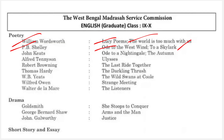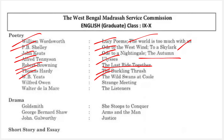From John Keats we have 'Ode to a Nightingale' and 'To Autumn.' From Alfred Lord Tennyson we have 'Ulysses.' Robert Browning — 'The Last Ride Together.' Thomas Hardy — 'The Darkling Thrush.' W.B. Yeats — 'The Wild Swans at Coole.' Wilfred Owen — 'Strange Meeting,' an anti-war poem. Walter de la Mare — 'The Listeners,' which can be considered a supernatural poem.